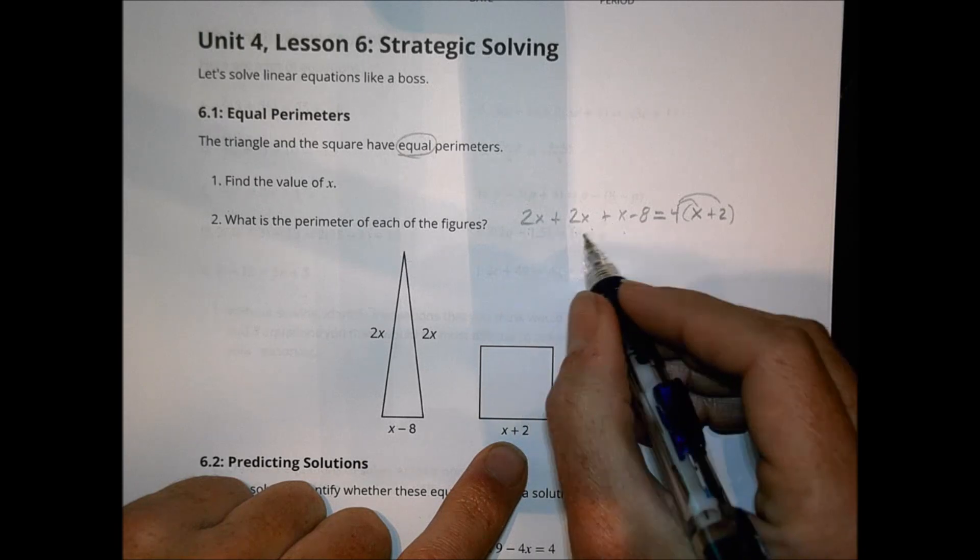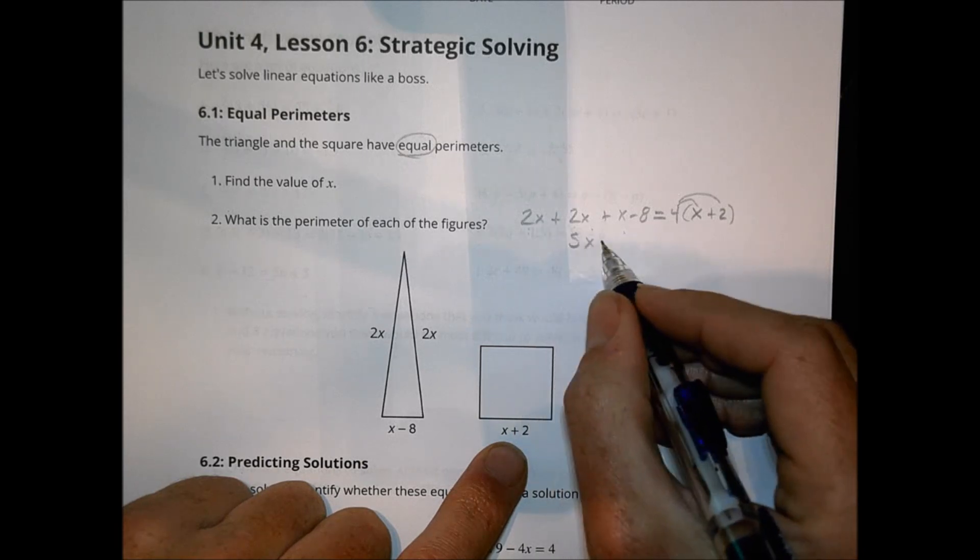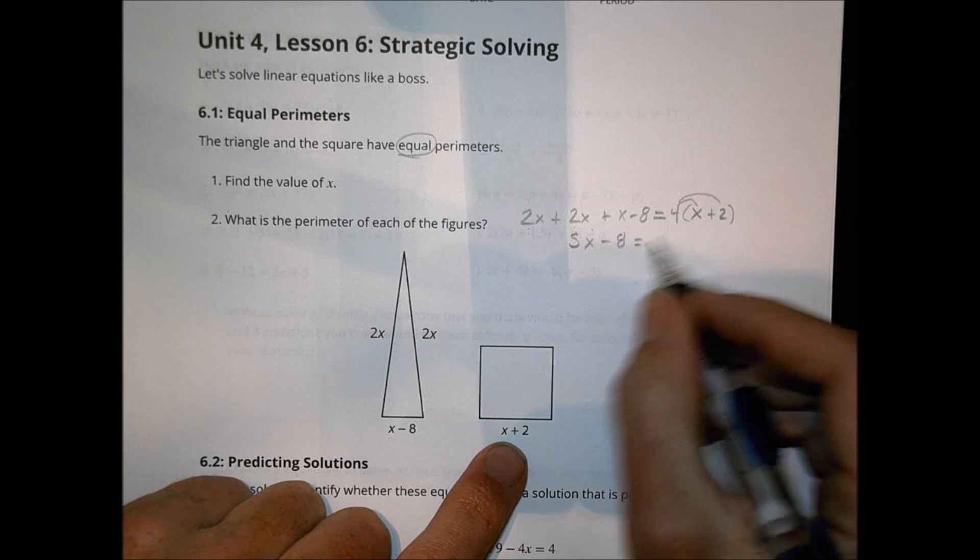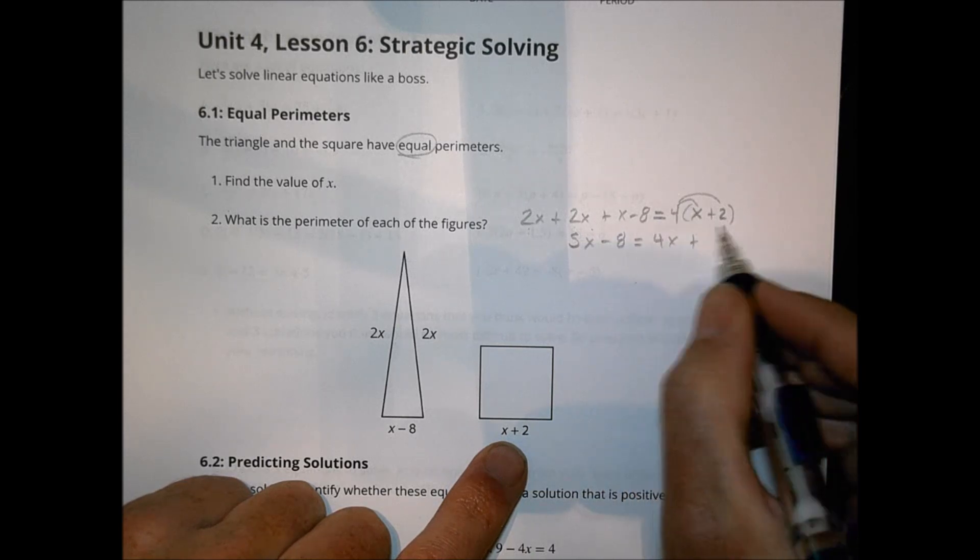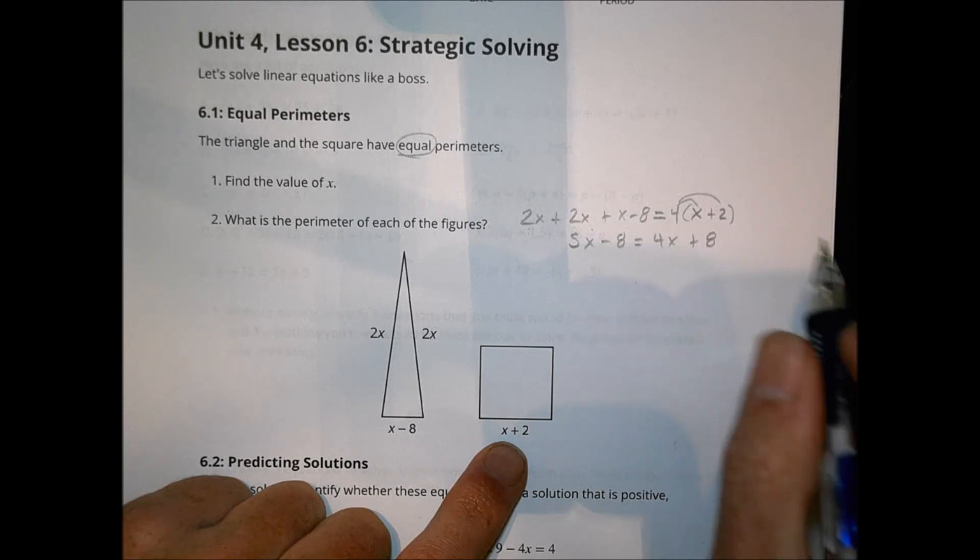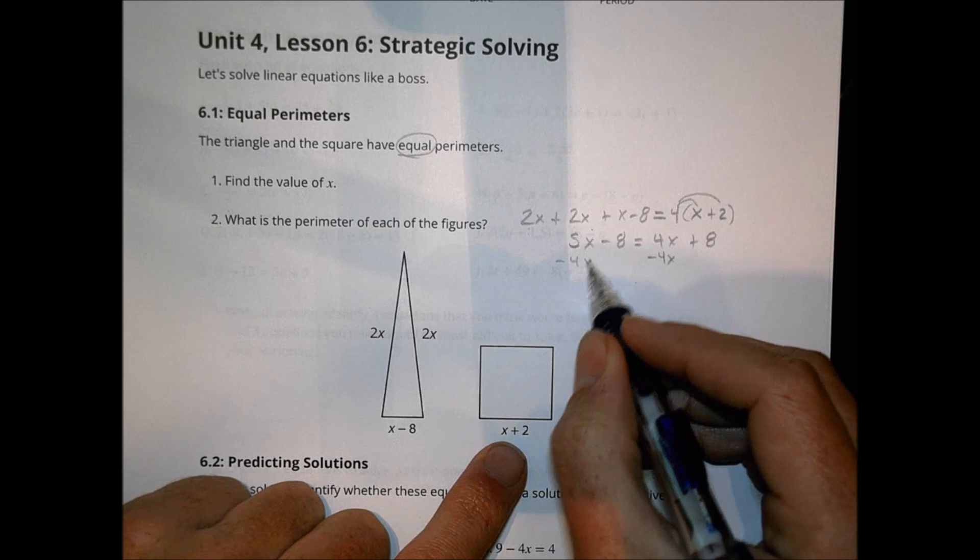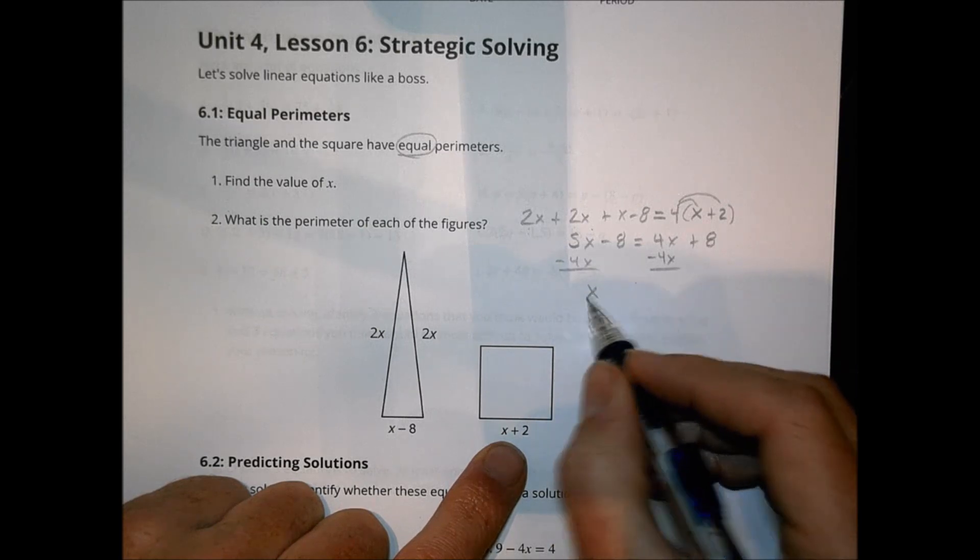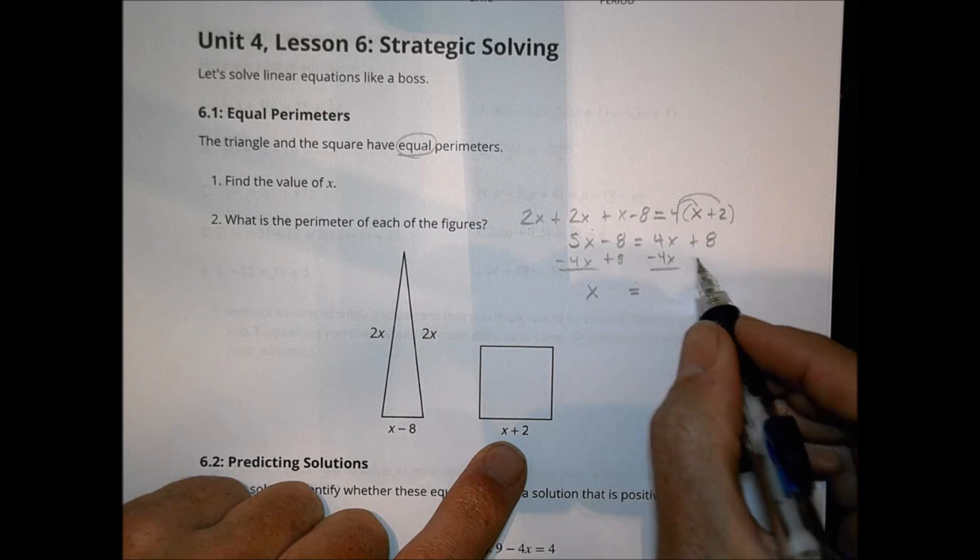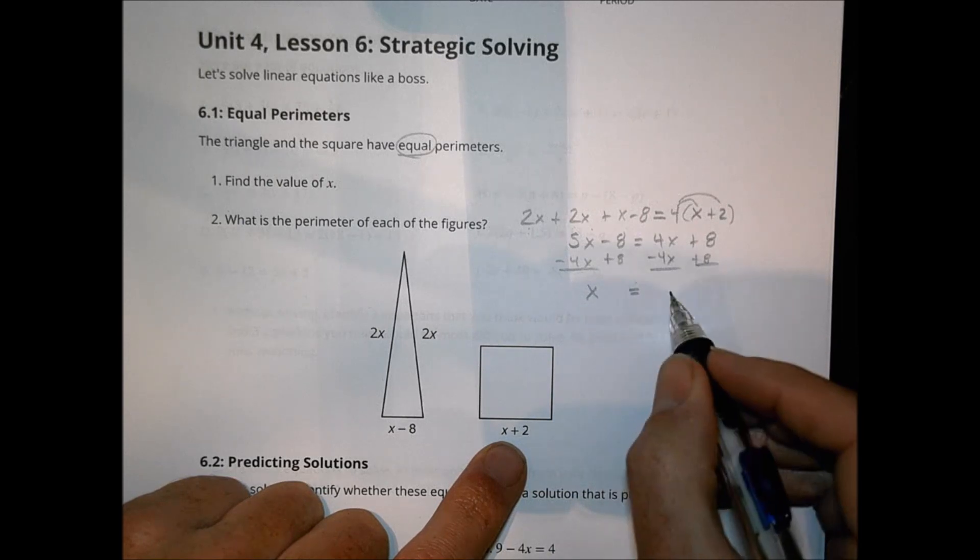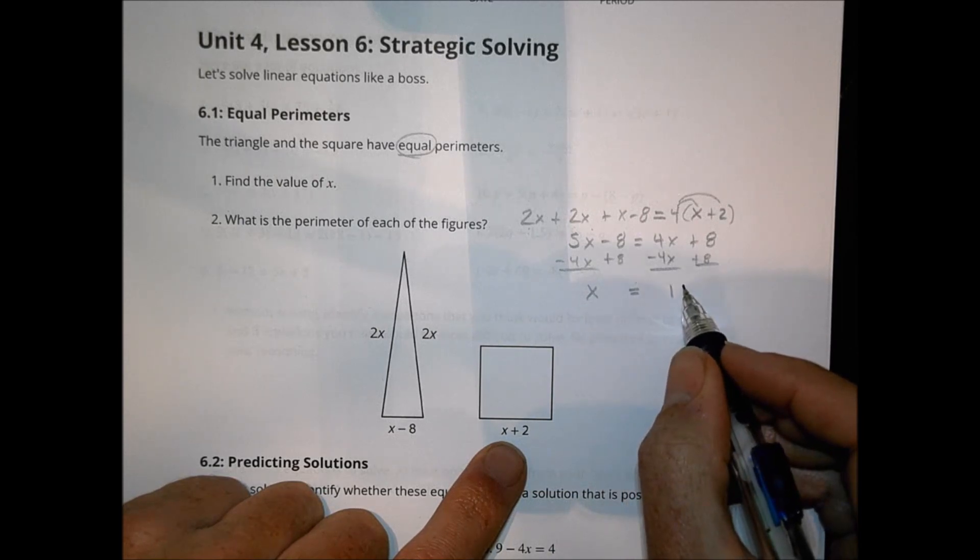So we can go ahead and combine these terms here. We have a 2, a 2, and a 1 for a 5x on this side minus 8 is going to be equal to 4 times x, which is 4x, plus 4 times 2, which is 8 there. Now we can go ahead and we can subtract a 4x from here and a 4x from there. So we're left with x on this side being equal to, let's add 8 here and add 8 there, being equal to 16.